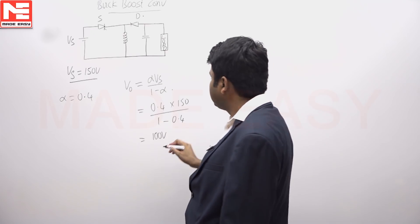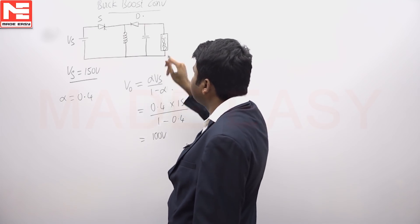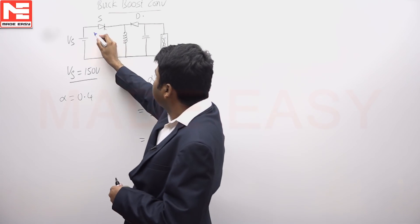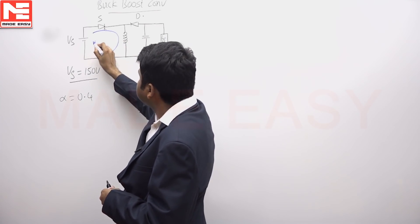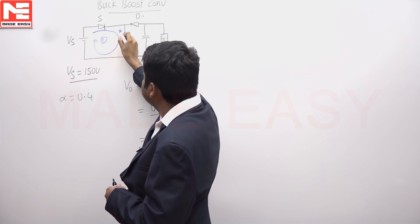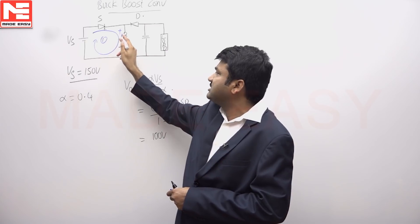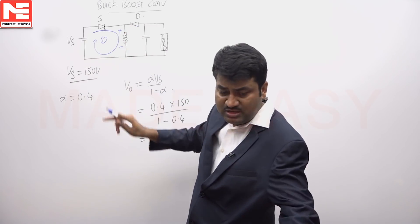But what is the actual polarities in the load? In the first mode when the switch is on, L stores energy like this. This is the voltage of inductor in the first mode until the switch is on - L stores energy, diode remains in the off state.